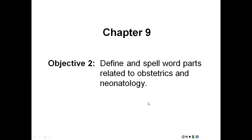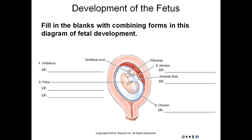Continuing with Objective 2, we're going to define and spell word parts related to obstetrics and neonatology. I'm just going to leave this up here while we go over the combining forms. So we have amnio and amniano, which mean amnion or amniotic fluid.